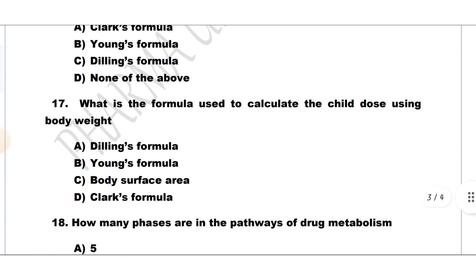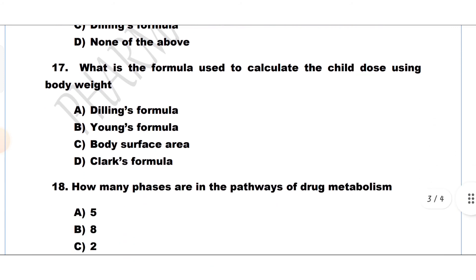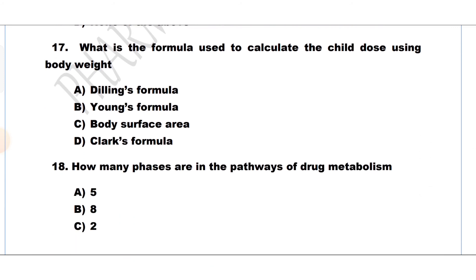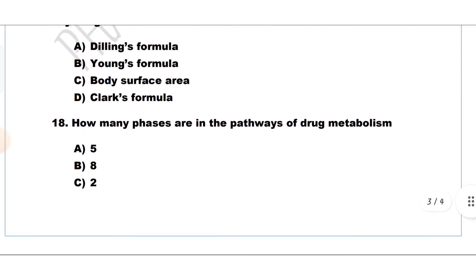Question number 17. What is the formula used to calculate the child dose using body weight? Option A: Dilling's formula, Option B: Young's formula, Option C: Body surface area, Option D: Clark's formula. The answer is Option D, Clark's formula.